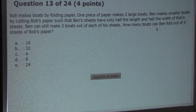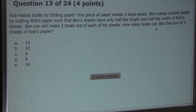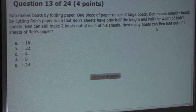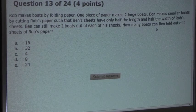Ben makes smaller boats by cutting Rob's paper, such that Ben's sheets have only half the length and half the width of Rob's sheets. Ben can still make two boats out of each of his sheets. How many boats can Ben fold out of four sheets of Rob's paper?